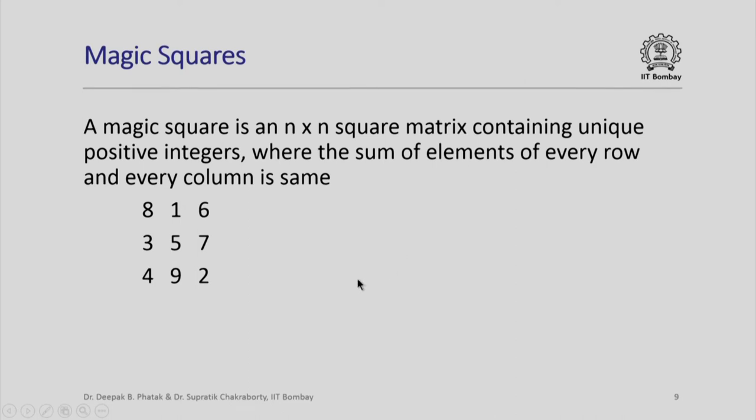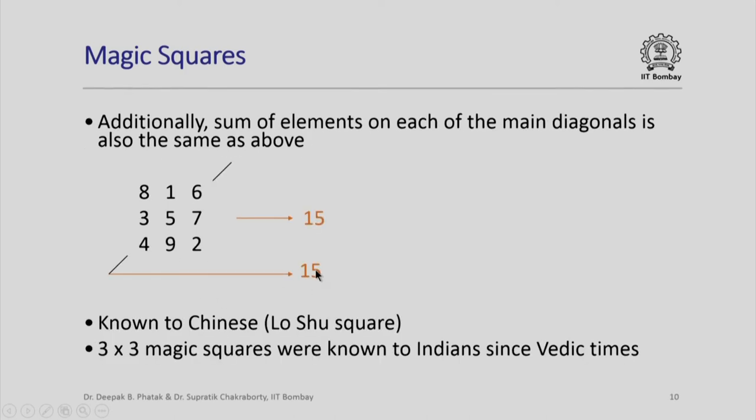We now look at magic squares. Magic square is an interesting square, it is an n by n square in its basic form which contains unique positive integers. The positive integers are arranged such that the sum of elements of every row and every column is same. Here is an example: 8 1 6, 3 5 7, 4 9 2. Let us look at the sums: 3 plus 5 plus 7 is 15, 8 plus 1 plus 6 is 15, 6 plus 7 plus 2 is also 15. Additionally this diagonal 6 plus 5 plus 4 is also 15. The other diagonal 8 plus 5 plus 2 is also 15. Very interesting matrix. These matrices were known to Chinese. They call them Loshu square. A 3 by 3 magic square was well known to Indians since Vedic time. This is a very ancient observation of such matrices.